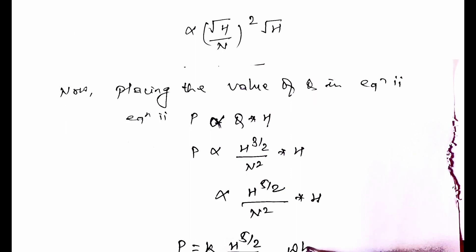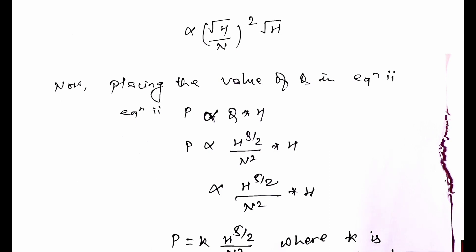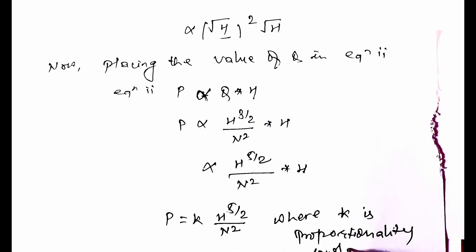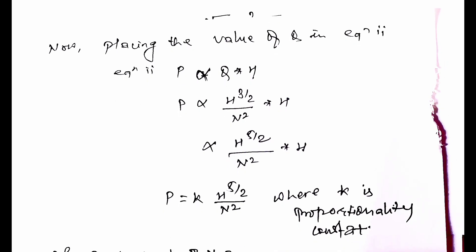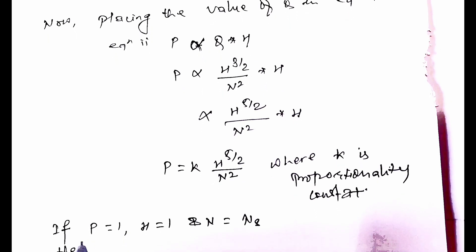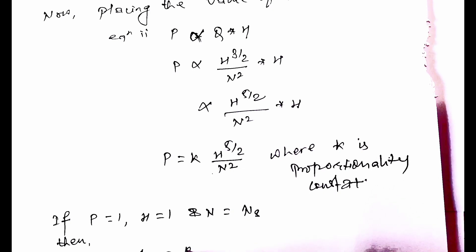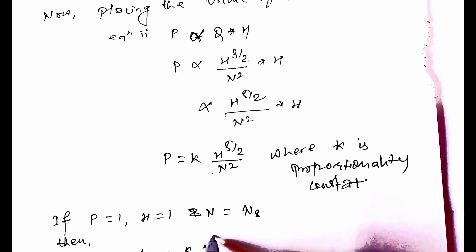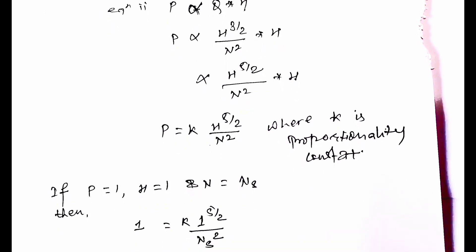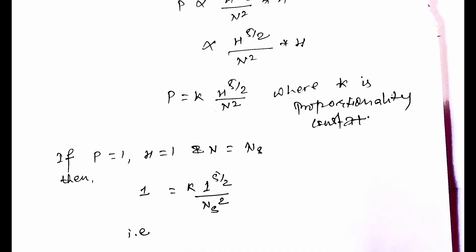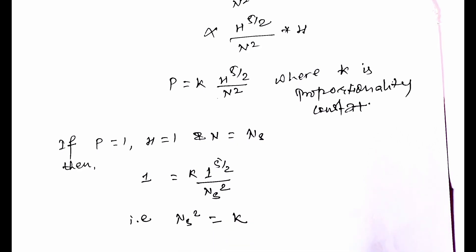Introducing K as the proportionality constant: P equals K · H to the 5/2 / N squared. If P equals 1, H equals 1, and N equals Ns (the specific speed), then this equation becomes: 1 equals K · 1 to the 5/2 / Ns squared, giving Ns squared equals K.